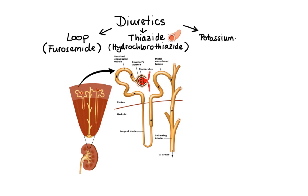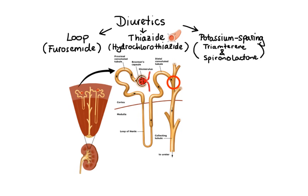Lastly, we have potassium-sparing diuretics such as triamterene and spironolactone, which increase diuresis by either interfering with the sodium-potassium exchange in the kidneys or by blocking the actions of aldosterone. Potassium-sparing diuretics are often used in combination with loop and thiazide diuretics to reduce loss of potassium. For more details, make sure you check out my video about diuretics.